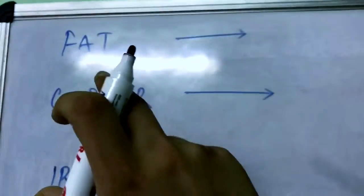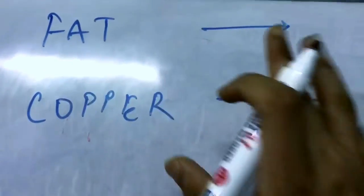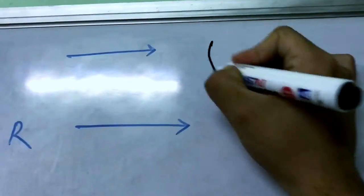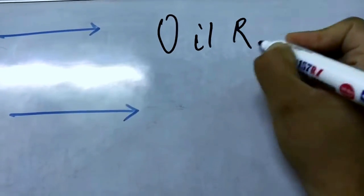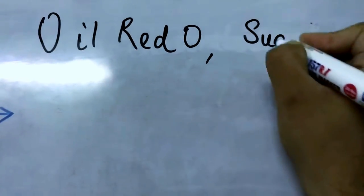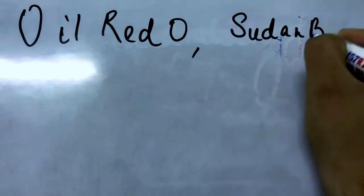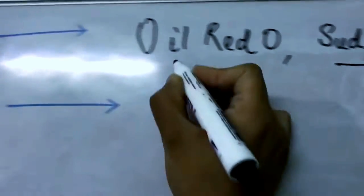So something which can easily be asked and actually has been asked is: fat is stained using which stain? And the answer to that question becomes either Oil Red O or Sudan Black B. Sudan Black B or Oil Red O is used to stain fat.